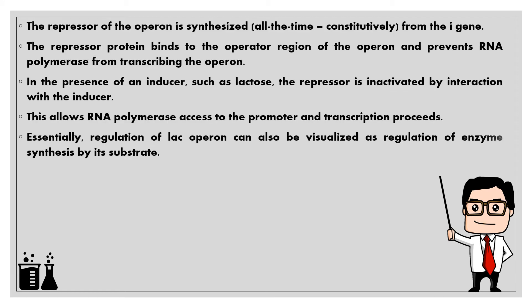The repressor of the operon is synthesized all the time from the I gene. The repressor protein binds to the operator region of the operon and prevents RNA polymerase from transcribing the operon. In the presence of an inducer such as lactose, the repressor is inactivated by interaction with the inducer. This allows RNA polymerase access to the promoter and transcription proceeds. Essentially, regulation of the lac operon can also be visualized as regulation of enzyme synthesis by its substrate.